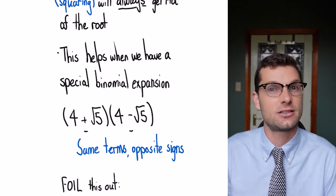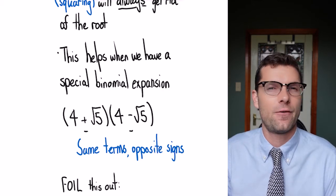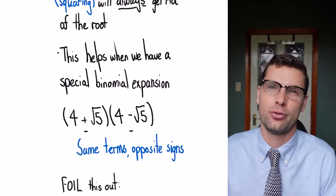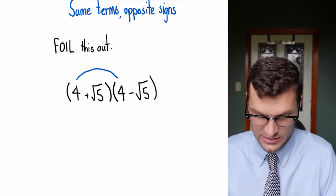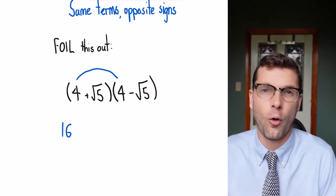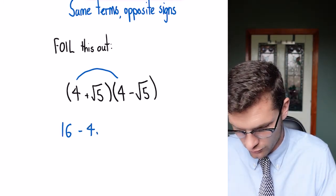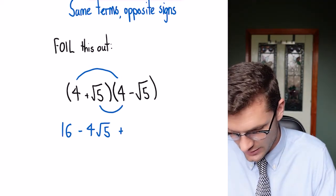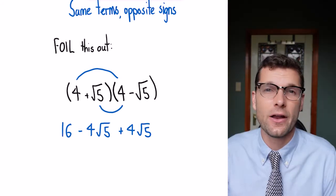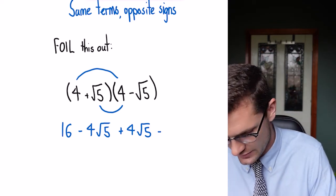We're going to find a really quick shortcut to do these almost instantly, but we're just going to FOIL it out first to see the proof. For this first example, I've got 4 times 4 which is 16. 4 multiplied by negative √5 is minus 4√5. Then my inside terms here is plus 4√5, and finally √5 times minus √5 is just minus 5.